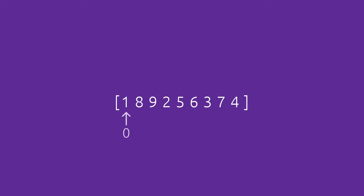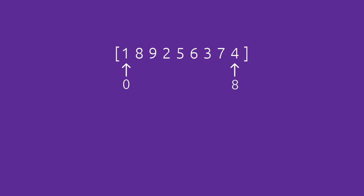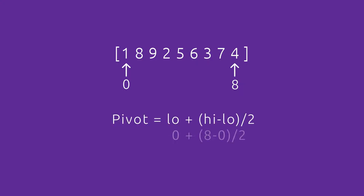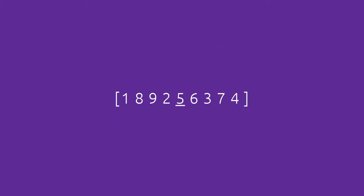We have an array that we're going to apply the Quicksort algorithm to. We're going to find the lowest index, which is zero, and the highest index, which is eight, assigned to variables low and high. We need a pivot element, which we calculate using low plus high minus low divided by two, giving us index four as our pivot element, which has value five.